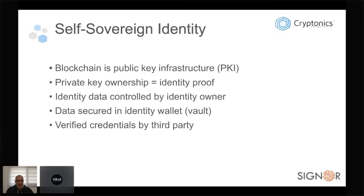Private key ownership equals an identity proof in this model. Whenever we want to prove who we are, we sign something with our private key or use related cryptographic primitives. The data is controlled by the identity owner in self-sovereign identity and secured in what is called an identity wallet — better called an identity vault — which holds our credentials and all private data. We submit proofs of these to whoever we want to verify something to, and we can choose to disclose our data.